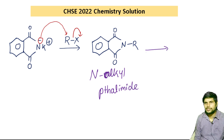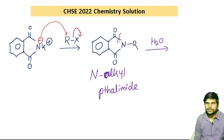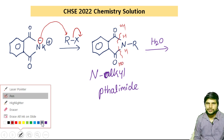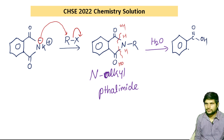Further hydrolysis of N-alkyl phthalimide — upon hydrolysis we will get the compound. Here is hydrogen, here is OH. Put a hydrogen and put an OH, so we get phthalic acid and the corresponding amine.